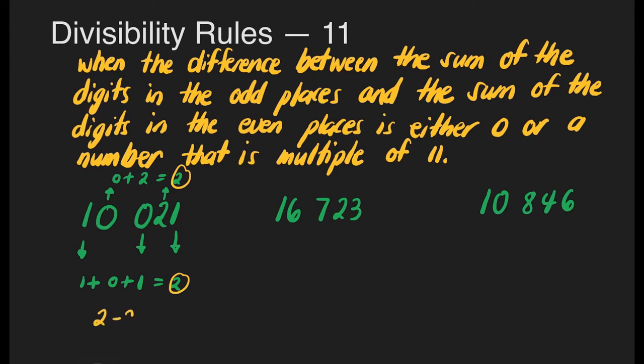2 minus 2 is 0. It says there, if this difference is either 0 or a multiple of 11, then that number is divisible by 11. So in this case, our difference is 0. It means 10,021 is divisible by 11. I want to check on that by dividing 10,021 by 11.